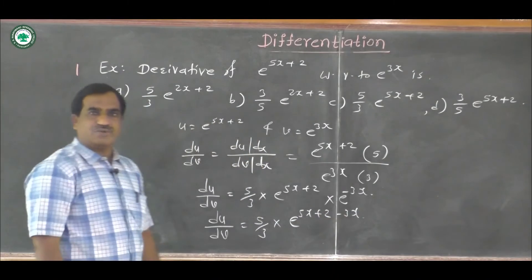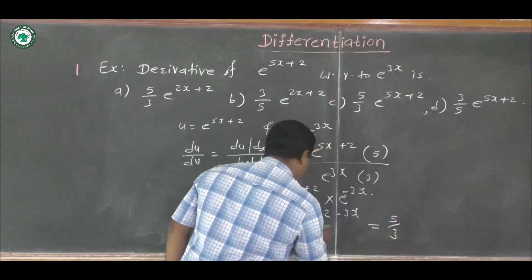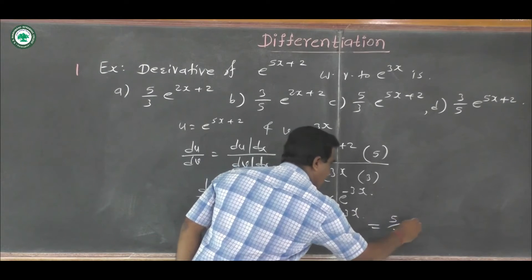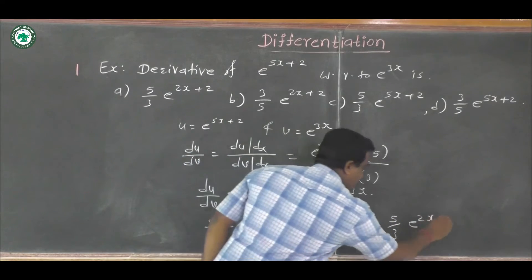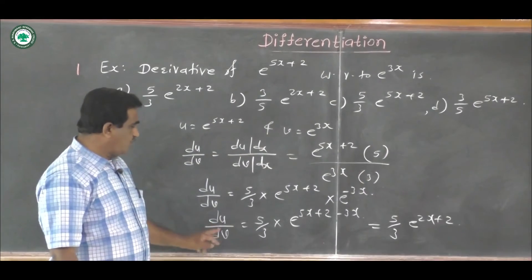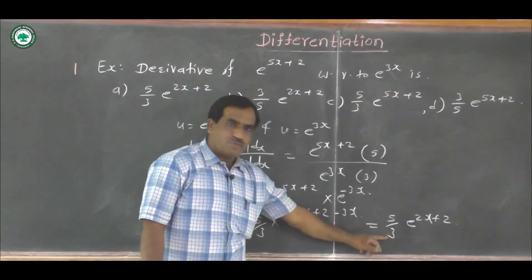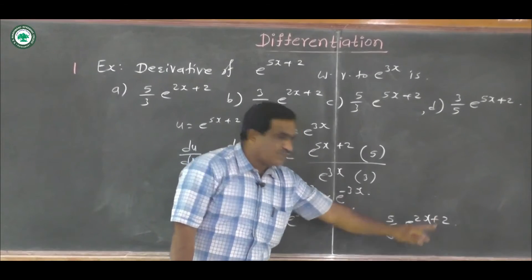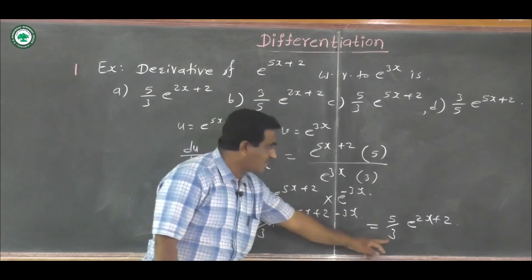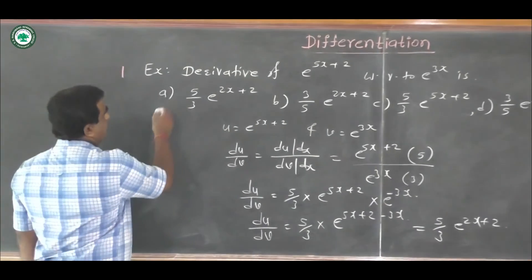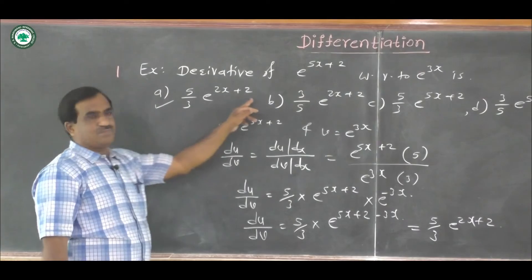Simplifying: 5x minus 3x equals 2x, so we get (5 by 3) into e raised to (2x plus 2). That is, du by dv equals (5 by 3) into e raised to (2x plus 2). This is the correct answer, which matches option A. This is a simple example we can solve in 2 minutes.